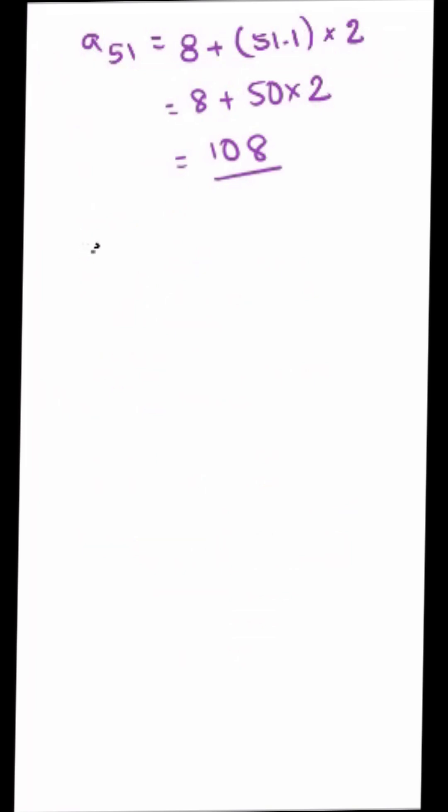Now we want to find a_60, 8 plus 60 minus 1 into 2. That's equal to 8 plus 59 into 2. That's equal to 126.